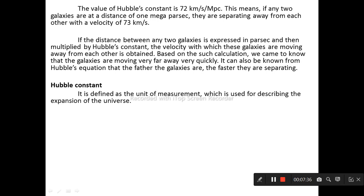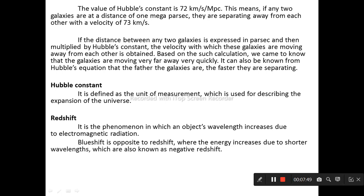Hubble's constant is defined as the unit of measurement which is used for describing the expansion of the universe. Redshift is the phenomenon or process in which an object's wavelength increases due to electromagnetic radiation. Blueshift is opposite to redshift, where the energy increases due to shorter wavelengths, which are also known as the negative redshift. Doppler effect is the movement of objects either closer or apart from each other in space.